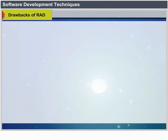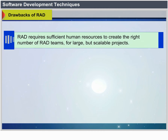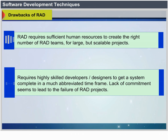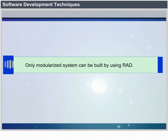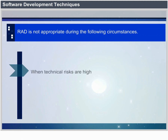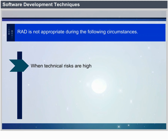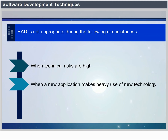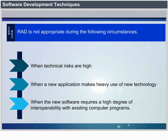Drawbacks of RAD: for large but scalable projects, RAD requires sufficient human resources to create the right number of RAD teams. It requires highly skilled developers and designers to complete a system in an abbreviated timeframe. If commitment is lacking, RAD projects will fail. Only systems that can be modularized can be built using RAD. RAD is not appropriate when technical risks are high, when a new application makes heavy use of new technology, or when it requires a high degree of interoperability with existing programs.